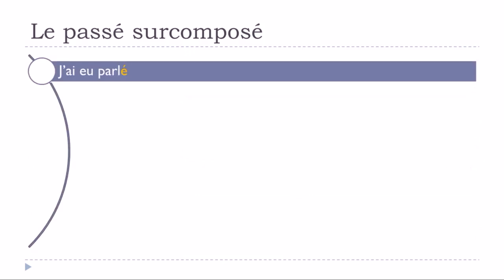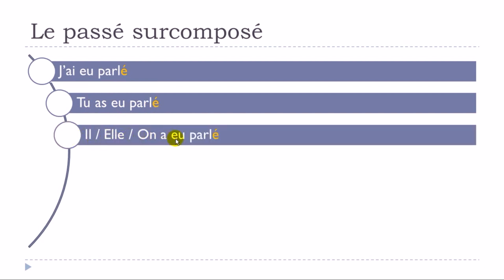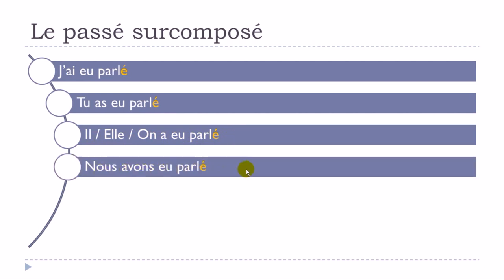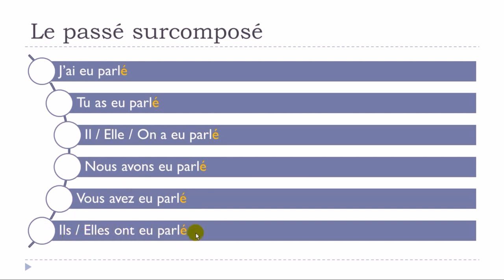Let's see a full conjugation example with the verb parler in the passé surcomposé. The first part is avoir at the passé composé, then the participe passé: j'ai eu parlé, tu as eu parlé, il/elle/on a eu parlé, nous avons eu parlé, vous avez eu parlé, ils ont eu parlé, elles ont eu parlé. When constructed with avoir, the participe passé always stays as parlé — no feminine or plural marks are added.